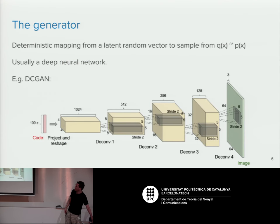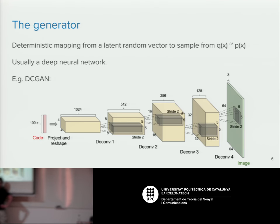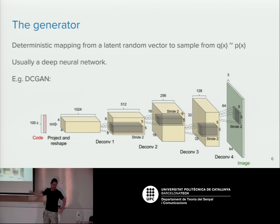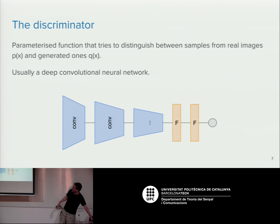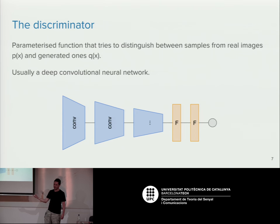The generator can be any differentiable function, but usually it's a deep neural network. A classic example is a DCGAN — Deep Convolutional Generative Adversarial Network — which maps low-dimensional Gaussian noise through several deconvolution layers to produce an image that looks realistic. You can add residual connections or whatever you want. The discriminator is another deep network going in the opposite direction, from image down to a binary output saying whether it's real or fake.